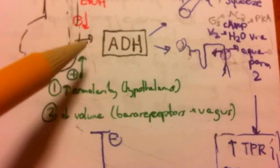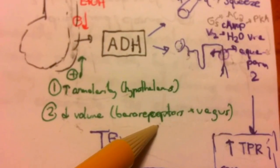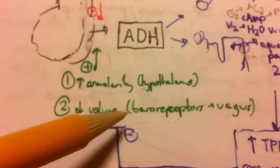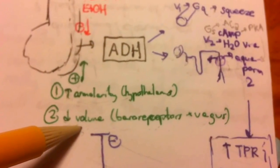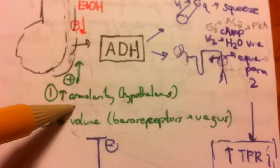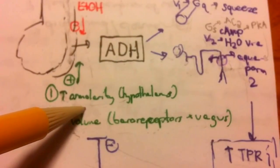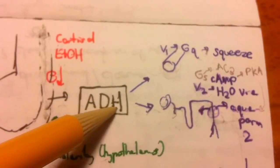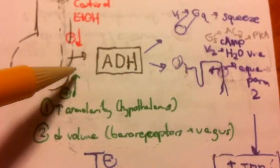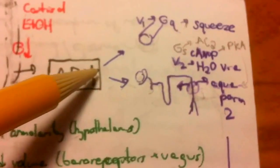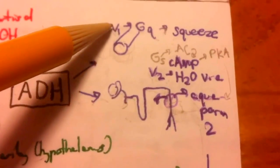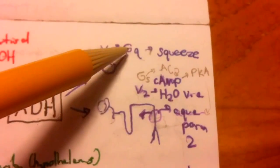ADH is also released in response to decreased volume as sensed by baroreceptors, with afferents from the vagus feeding back to the hypothalamus. Baroreceptors are concentrated in the CNS and lungs. Low volume signals that we need to retain more water; high osmolality signals dehydration, again prompting water retention. ADH acts on V1 receptors causing vascular smooth muscle contraction, and on V2 receptors - the more important pathway.